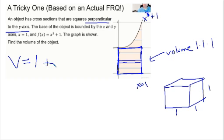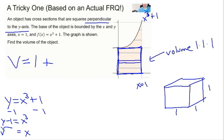Now because they did this sideways, we need to take this y equals x cubed plus 1 and solve it for x and put it in terms of y. So I subtract 1 from both sides. y minus 1 equals x cubed. Take the cube root of both sides and x equals the cube root of y minus 1.